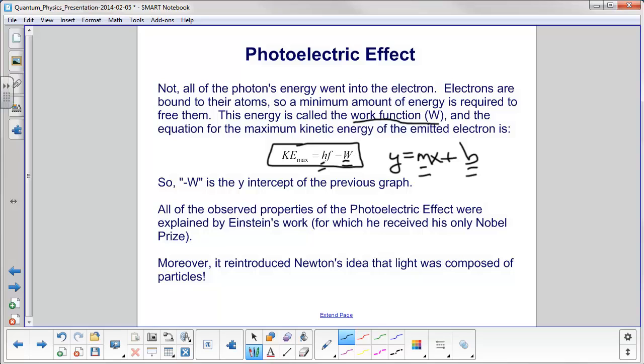All of the observed properties of the photoelectric effect were explained by Albert Einstein's work. And what's amazing is most people know Einstein for relativity and for writing a letter to President Roosevelt supporting the development of the atomic bomb for World War II, but the only time he received his Nobel Prize was for the photoelectric effect.